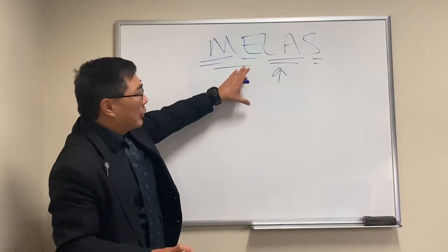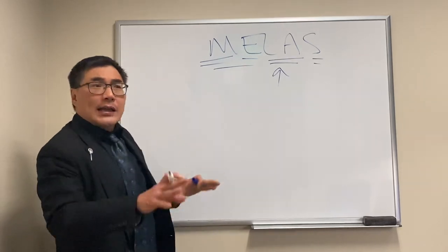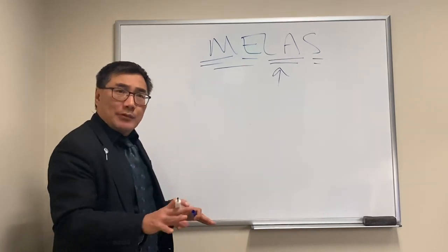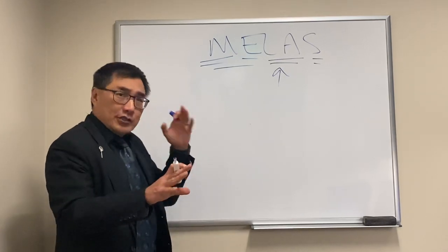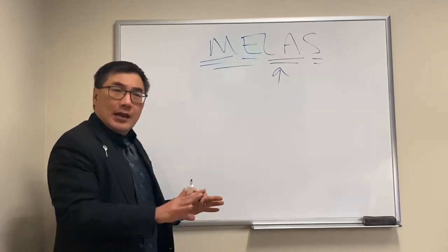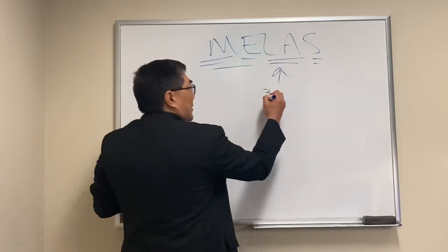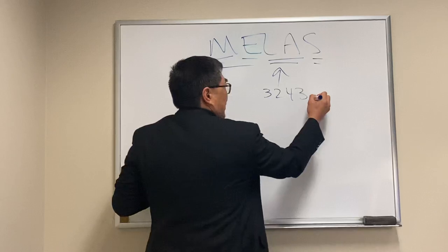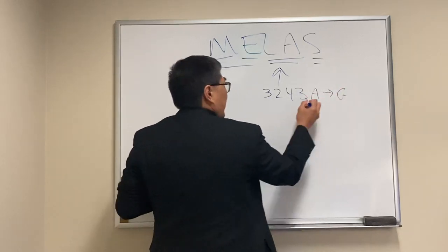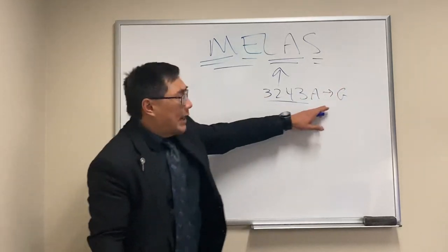But usually we're going to start with the blood tests. As opposed to Leber hereditary optic neuropathy, where the primary mutations are in complex one of the electron transport chain, in MELAS, the most common association is the 3243 A>G.